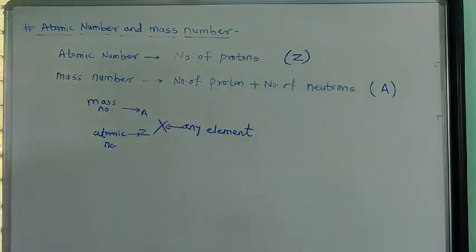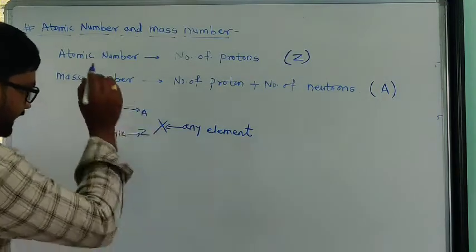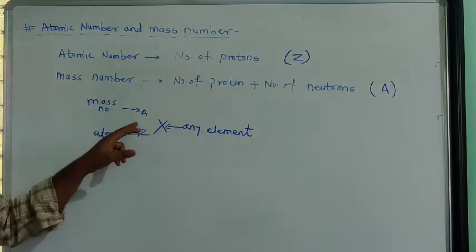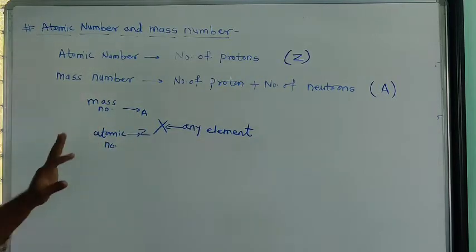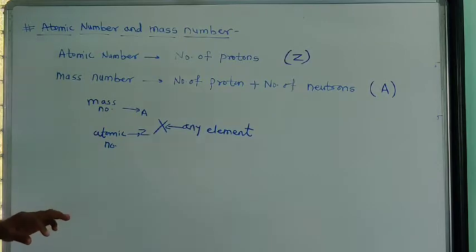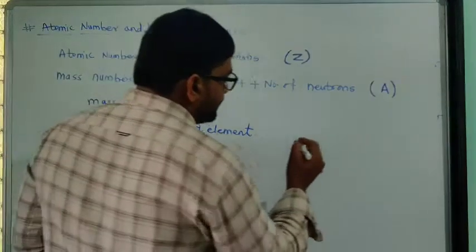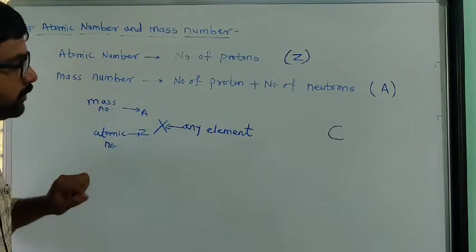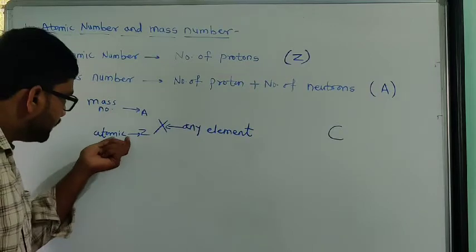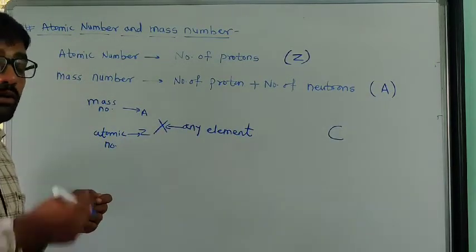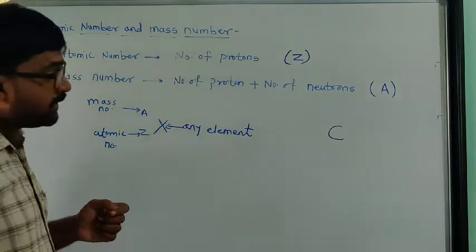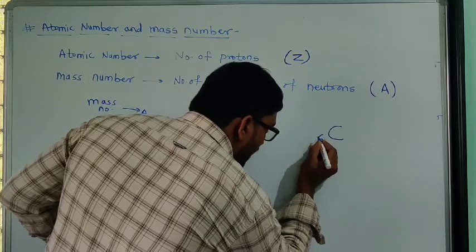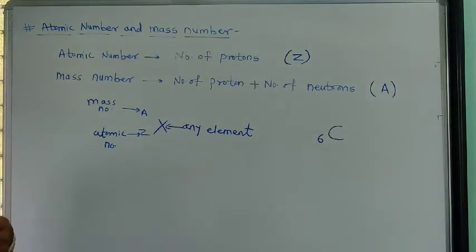Elements are generally represented by X. These notations are used to denote atomic and mass number: X is any element, Z is its atomic number, and A is its mass number. In this representation, on the downward side we write the atomic number and on the upward side we write the mass number. Suppose we have to see the example of carbon - the atomic number of carbon is 6, so we write 6 on the downward side.